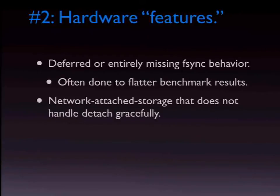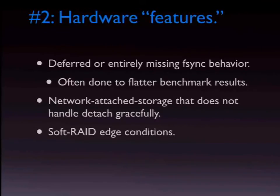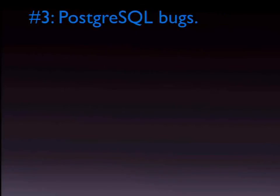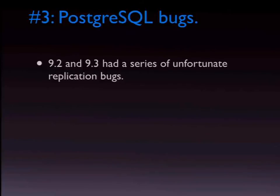Network-attached storage where disconnection is not graceful can cause metadata problems in the file system. If you're using software RAID, that software has bugs. SANs have software and bugs too. And, sadly, Postgres bugs. 9.2 and 9.3 had some unfortunate replication bugs. The good news is these aren't common — it's usually not the first thing to think of. But they do happen. Anyone running 9.6.1? Check the release notes on 9.6.2.